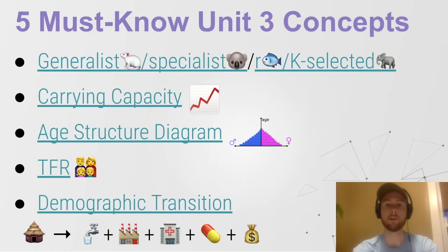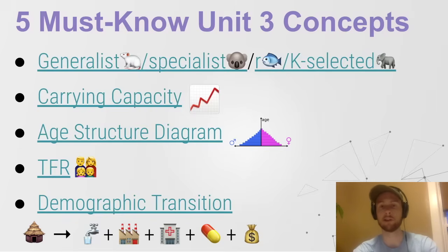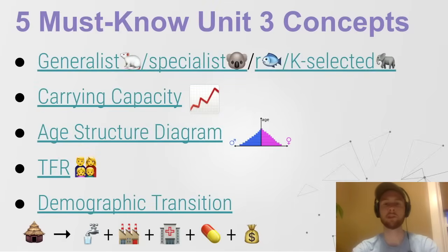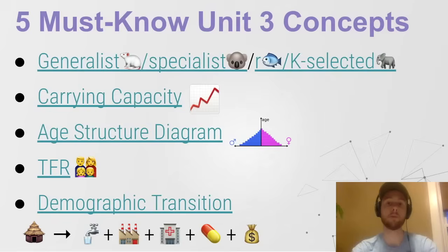Then we have TFR — total fertility rate — the total number of children that a woman will have in her lifetime. It is decreasing globally over time, but it's a big proxy for measuring the impact we're having on the environment because more people means greater environmental impact. And then finally, we have demographic transition — a theory that predicts that as countries develop, they will move from subsistence economies using biofuels and growing most of their own food to industrialized economies with better access to healthcare, clean water, and medication. As these countries develop, their carbon footprint and resource consumption greatly increase, creating an environmental problem of development.